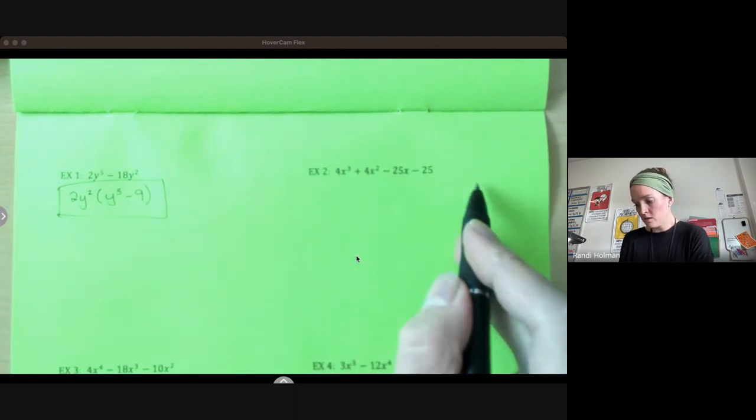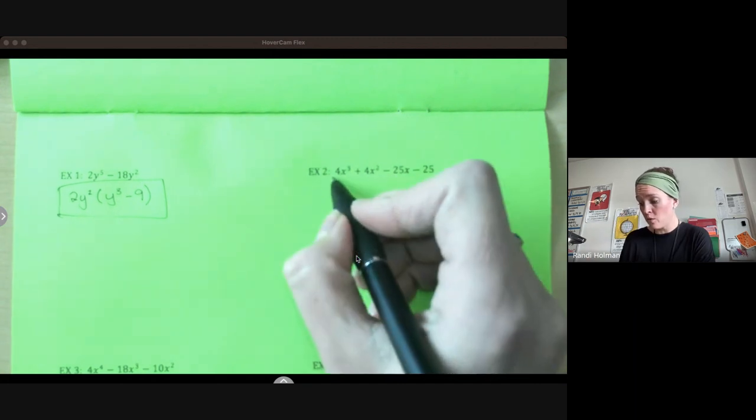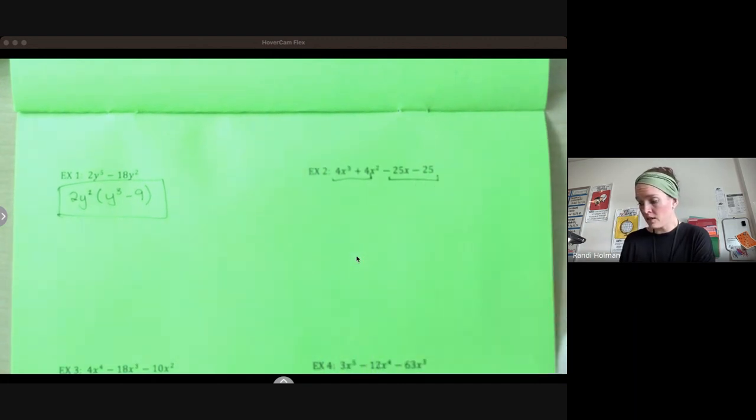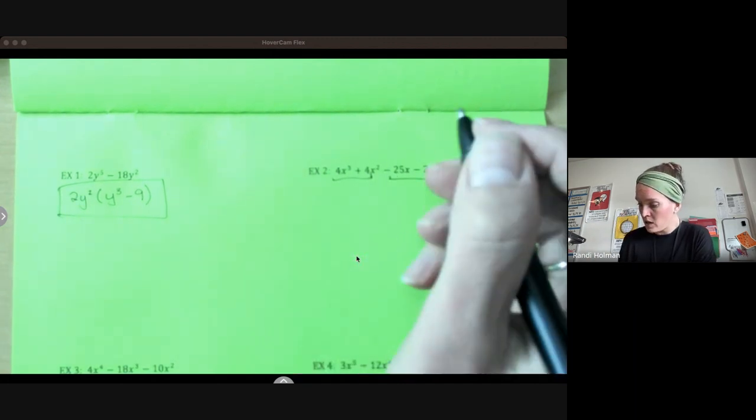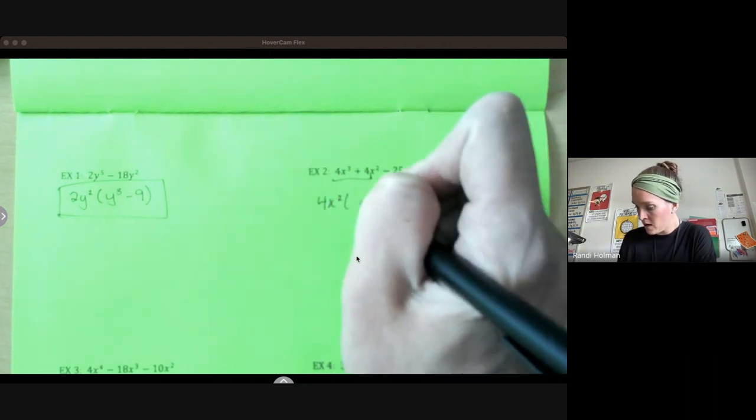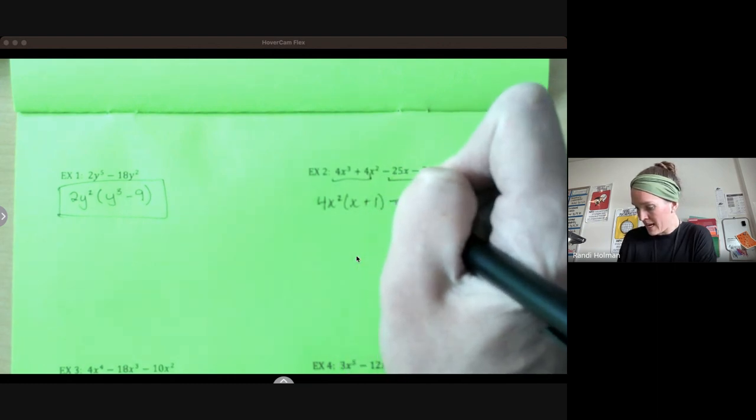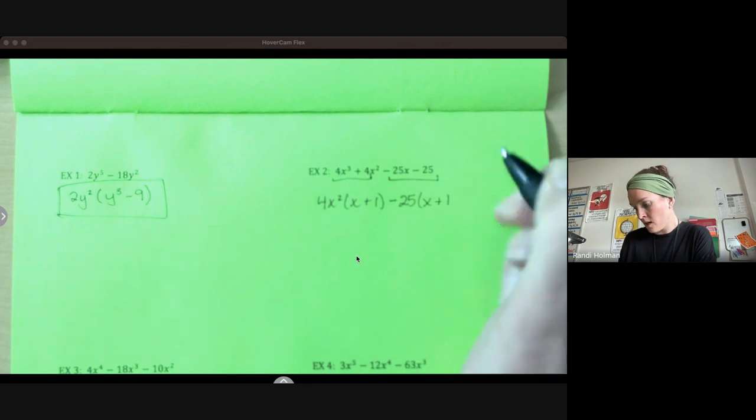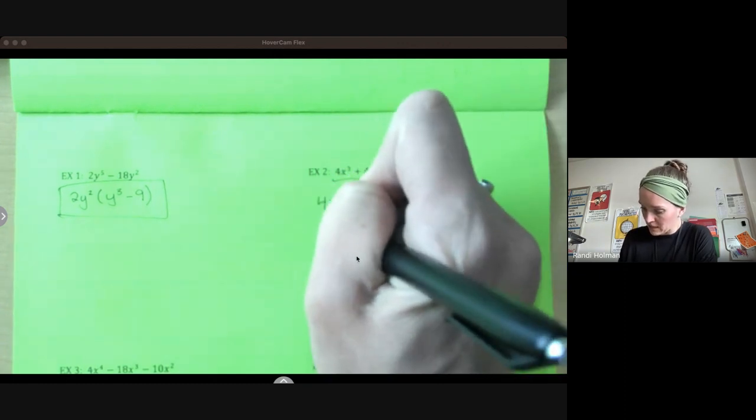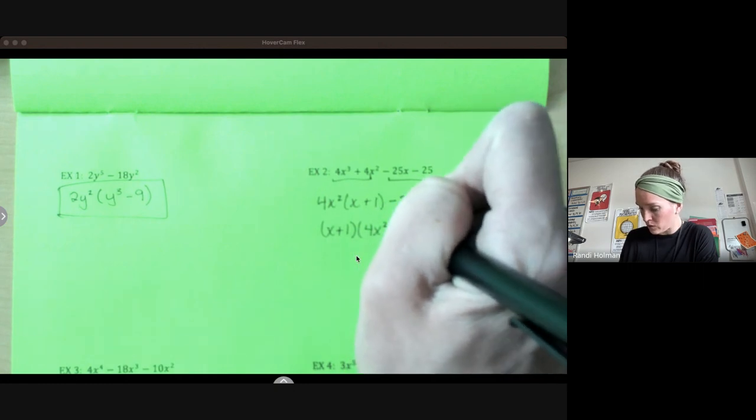Four terms. Still going to look for greatest common factor, but then you should already have a hint in your brain that you have four terms. You're looking for groups. No greatest common factor. So we're going to factor out our groups. We get 4x²(x + 1) and -25(x + 1). They both have an x + 1, and we're left with 4x² - 25.